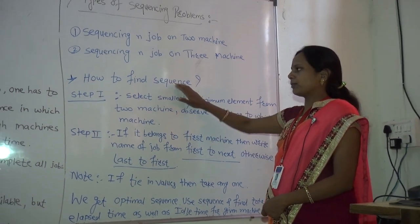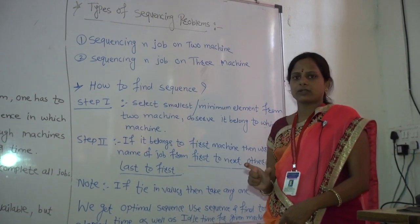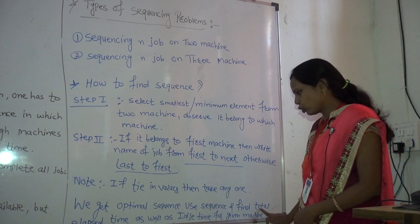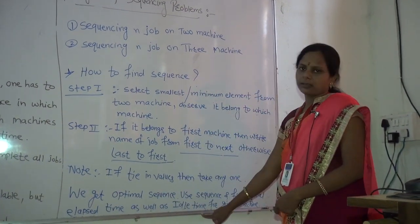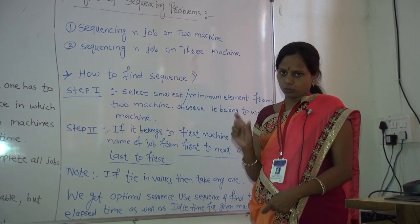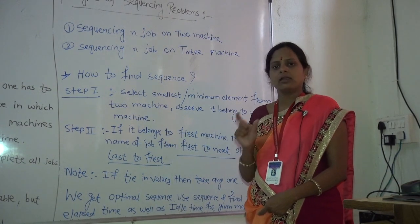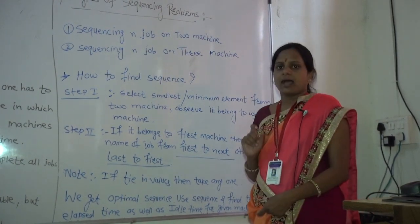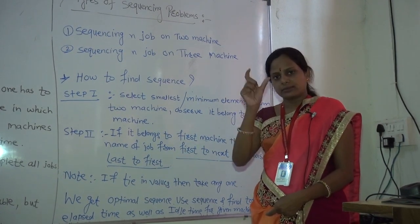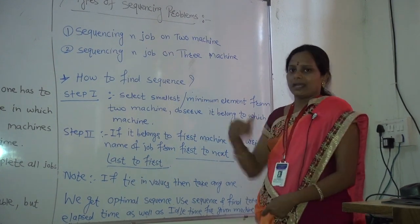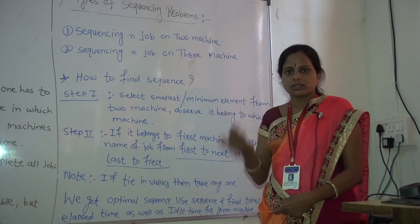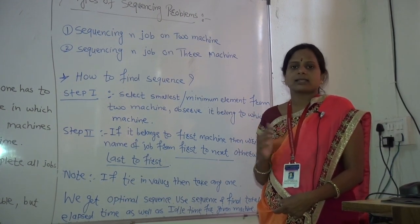In the sequencing problem, first find out the sequence. After finding the sequence, use it to find two more values: total elapsed time and idle time. Total elapsed time means at what time all jobs are completed on the machines. Idle time means when the machine is available but work is not happening on it — the time periods when the machine is not being used are added together, and that total is called idle time.